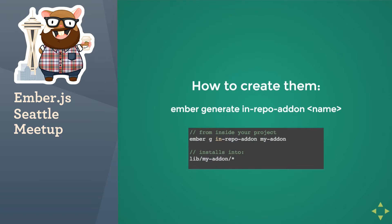Basically, you can generate them inside of an Ember project using Ember Generate, or Ember G. I like to use shorthands wherever I can. So Ember G, in-repo-add-on, and then the name of the add-on. That basically installs it into your lib folder in your Ember CLI project under the my-add-on namespace. What that will install is actually a package.json and an index.js — those are the only two files it puts in that folder. Then a little magic happens where it updates your package.json file in your project and links to that, basically telling NPM where to find those Ember CLI add-ons.